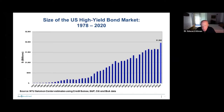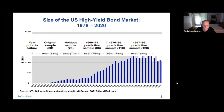This slide shows the size of the high yield junk bond market in the U.S. — it's close to $2 trillion today outstanding. When I got involved at the very beginning as a consultant to Morgan Stanley in 1981-82, they were interested in whether they should get involved in this highly profitable but highly risky, high-return market.